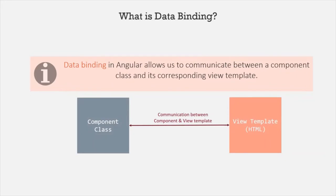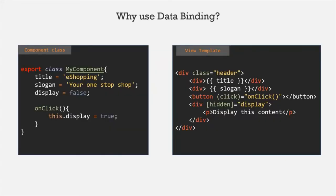Let's understand this with a simple example. For every component we have a component class and for that component class we have a corresponding view template. In the component class we specify the UI logic, so we create properties and methods. These properties and methods can be used in the view template. As you can see, inside this view template we are using the title property, the slogan property, and the display property, and these properties are defined in the component class.